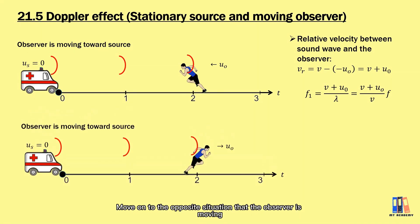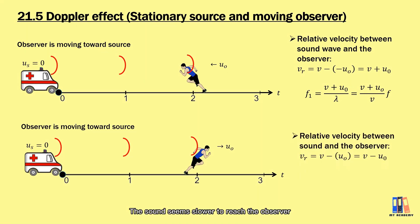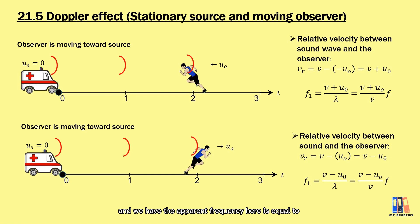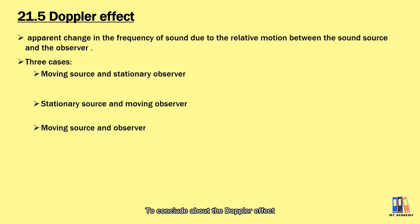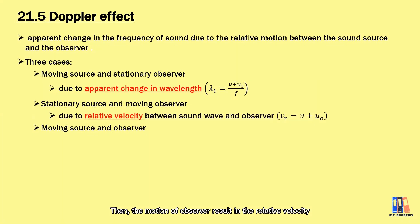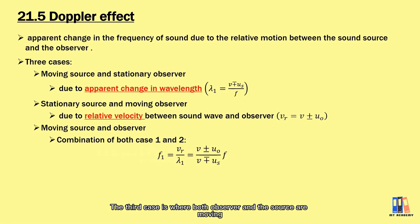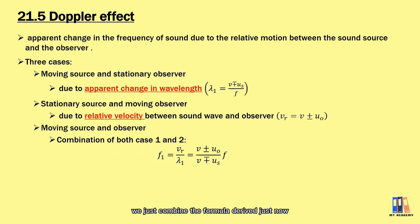When the observer is moving away from the source, the sound seems slower to reach the observer. The relative velocity becomes v minus u. Repeating the derivation, the apparent frequency equals (v minus u) over v multiplied by the original frequency. To conclude: a moving source causes an apparent wavelength change which affects the frequency received by the observer, while observer motion results in a relative velocity between the observer and the sound wave. In the third case where both observer and source are moving, we combine both formulas to get the final Doppler effect equation.